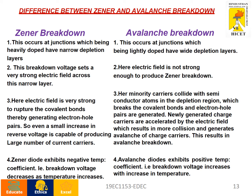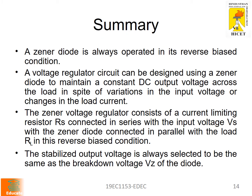Comparing zener breakdown and avalanche breakdown: zener breakdown occurs in heavily doped diodes while avalanche breakdown occurs in lightly doped diodes. A strong electric field is present in zener breakdown while a weak electric field is present in avalanche breakdown. The zener diode exhibits a negative temperature coefficient — breakdown voltage decreases as temperature increases — whereas the avalanche diode exhibits a positive temperature coefficient, meaning breakdown voltage increases with temperature.